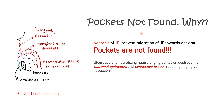A striking feature of necrotizing ulcerative periodontitis is that pockets are not found. When we probe and measure pocket depth, no pocket is detected. Let's see in detail why this happens — it is because of necrosis of the junctional epithelium and marginal epithelium connective tissue.